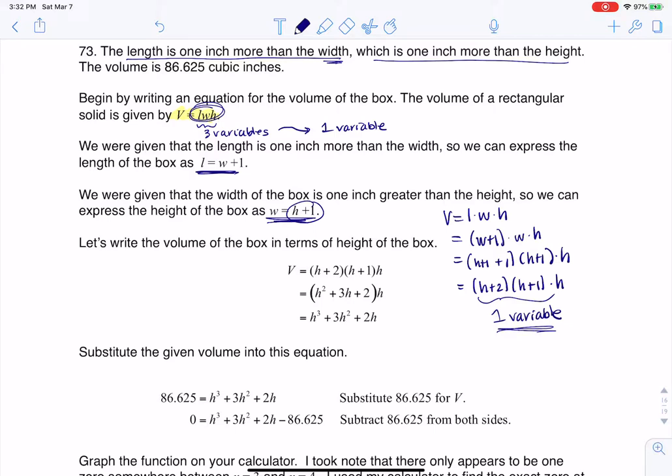So I got down from three variables to one variable. When I distribute this all out, when I multiply these binomials by foiling, I get H squared plus 3H plus 2. And then when I distribute the H through, I'm going to get H cubed plus 3H squared plus 2H. And they told me that volume was 86.625.